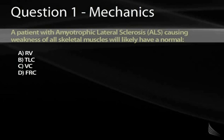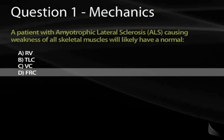Total lung capacity, vital capacity, and residual volume will all likely be lower. ALS and other neuromuscular diseases cause restrictive physiology — we won't be able to increase our lung volume as much. But actually FRC is going to stay the same. There's nothing about muscle weakness that has changed the chest wall's tendency to expand out or the lung's tendency to collapse down, so FRC stays the same.